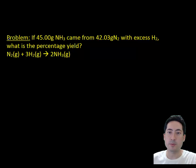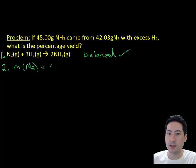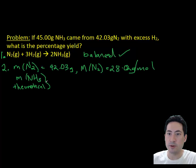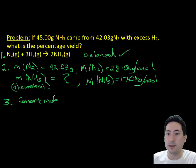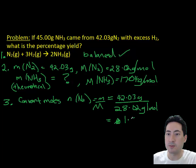Here's the first problem. 45 grams of ammonia came from 42 grams of nitrogen. We have the balanced equation done for us, and so we need to work out how much we should have got. If we grab 42 grams of nitrogen, that gives us a number of moles as 1.5.